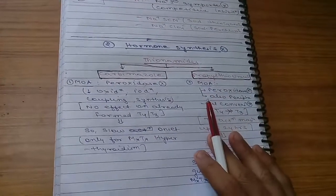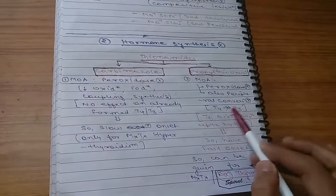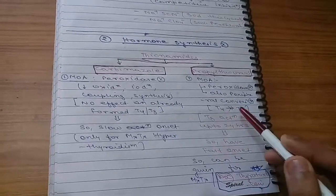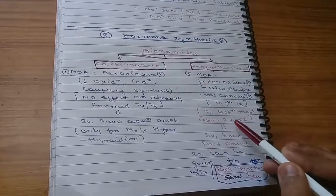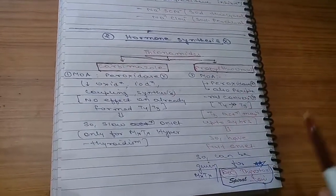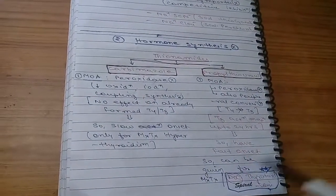Propylthiouracil mechanism of action is inhibition of peroxidase as well as peripheral conversion. T3 action is maximum, seen up to 24 hours, so it has fast onset because it's also inhibiting peripheral conversion.